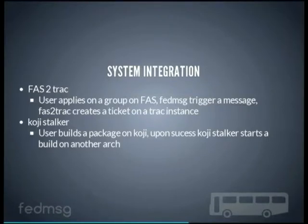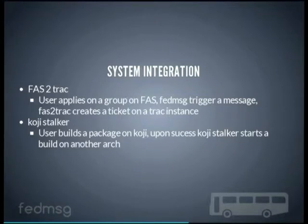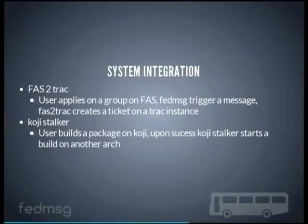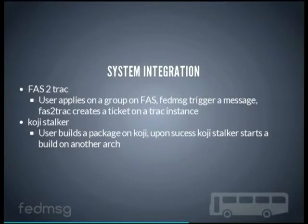There is also the Koji stalker. Back when ARM was a secondary architecture in Fedora, builds only happened on x86 and x86_64. The Koji stalker listened on the bus and every time a build was successful on the traditional architecture it would automatically start a build in the ARM branch of Koji. If that failed, the maintainer would get an email saying 'your build worked on the traditional platform but it's not working on ARM'.